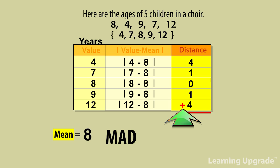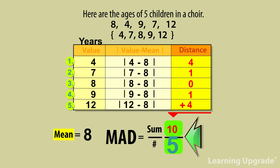Add up the number of units away from the mean: 4 plus 1 plus 0 plus 1 plus 4 equals 10. Divide 10 years by 5 students equals 2 years.